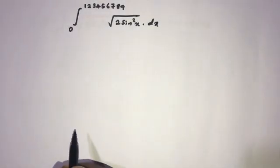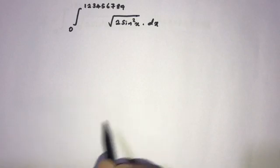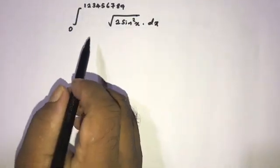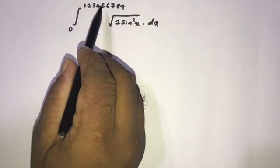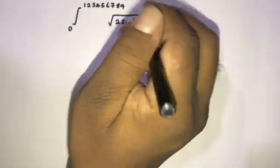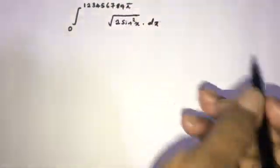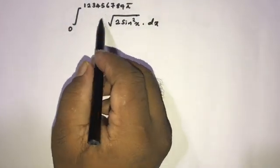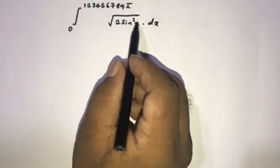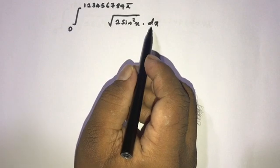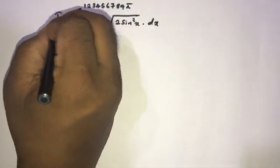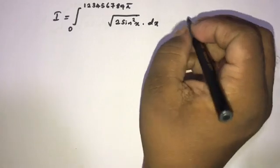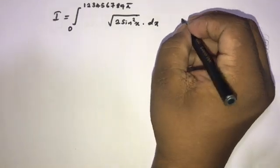Hi, welcome to the Mathematics MA channel. Today we are going to solve another interesting integral. The question is the integral from 0 to 1, 2, 3, 4, 5, 6, 7, 8, 9 times 5 of the square root of 2 times sine squared of x dx. I am going to take this equal to I sub n.